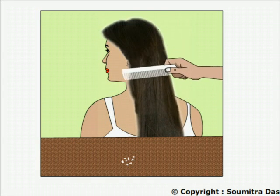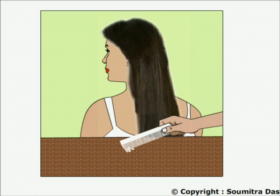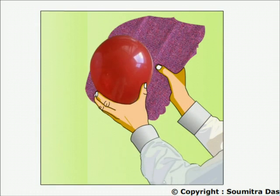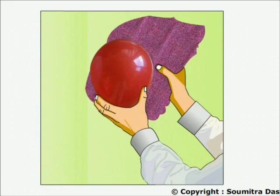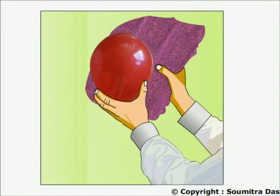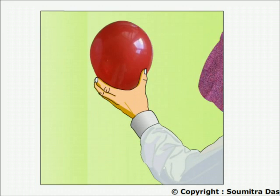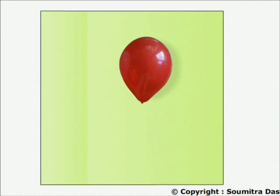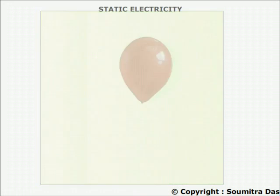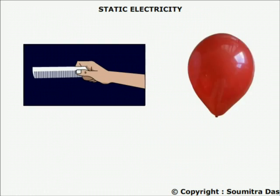When hair is combed for a while, the comb is found to attract light paper particles. When a balloon is rubbed against a woollen sweater, the balloon is found to cling to the wall. These incidents happen due to static electricity present in the comb and the balloon.